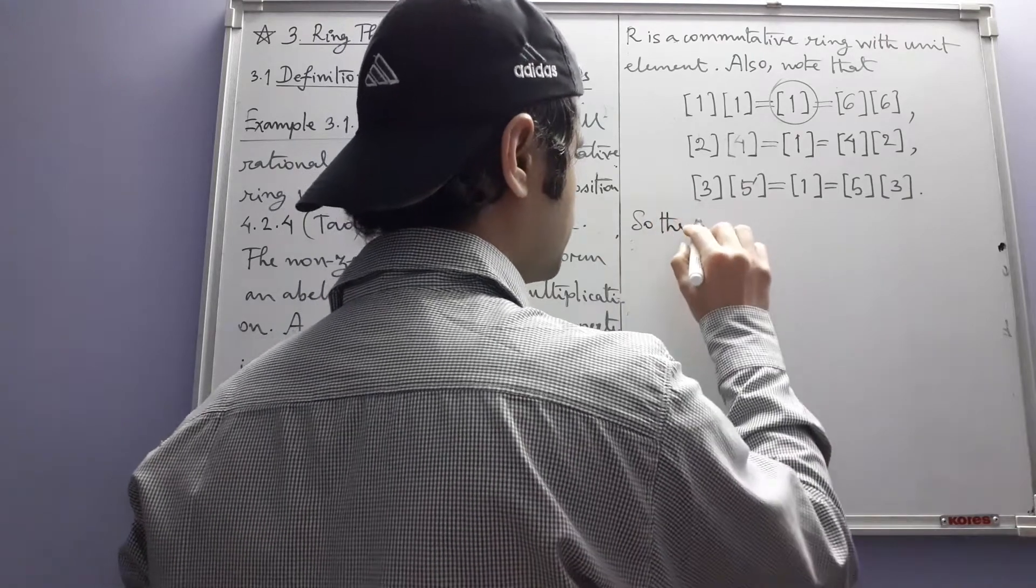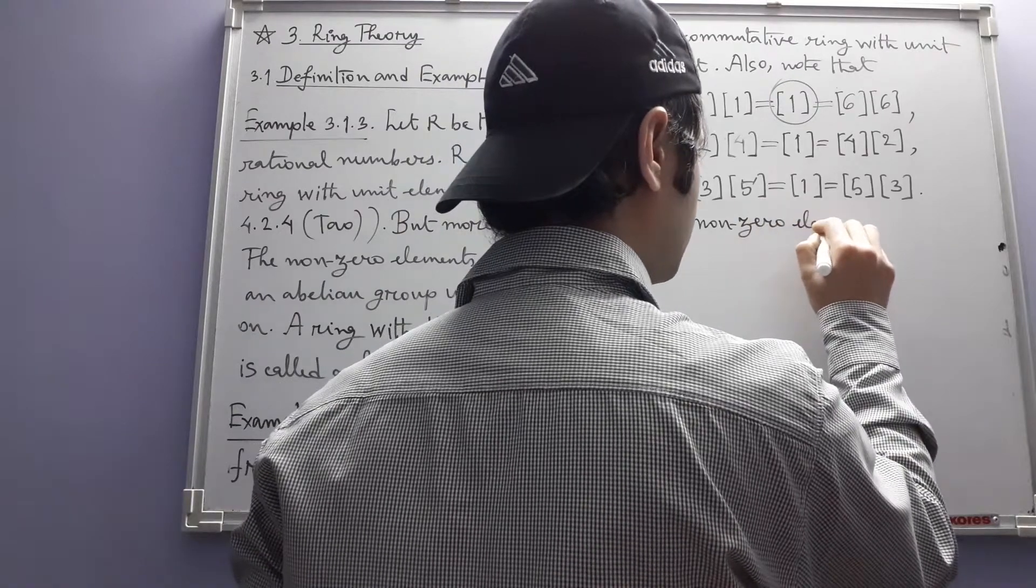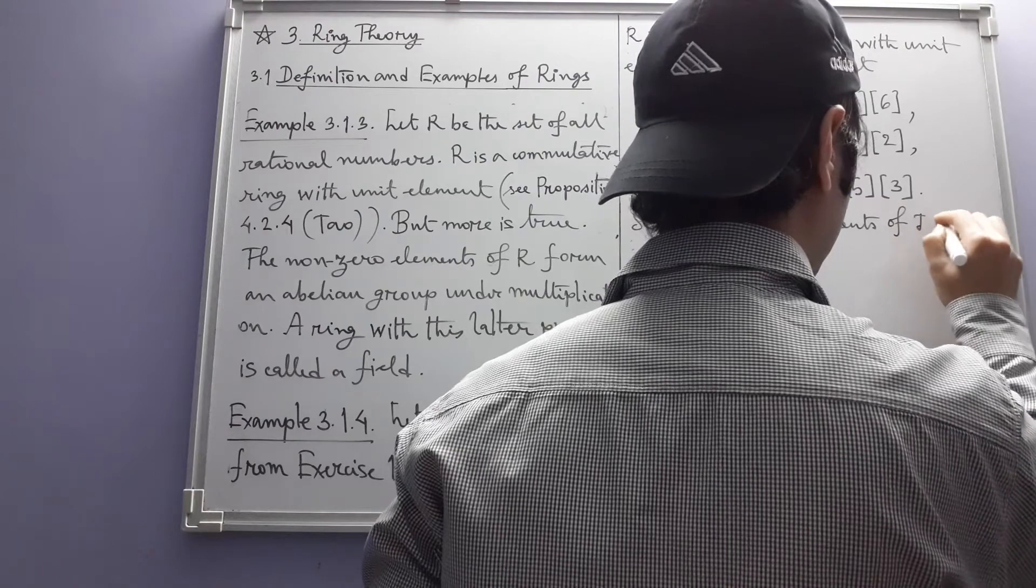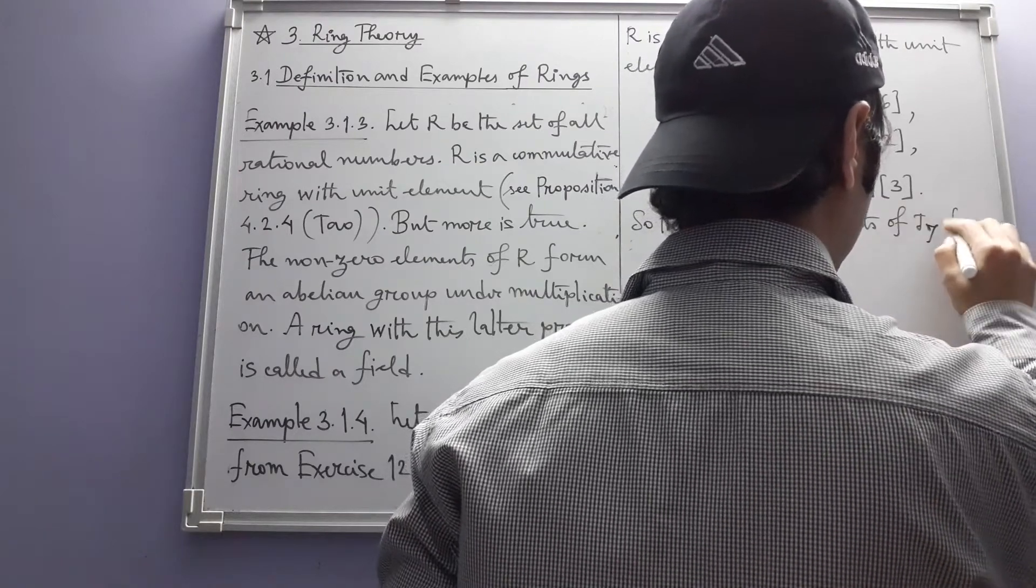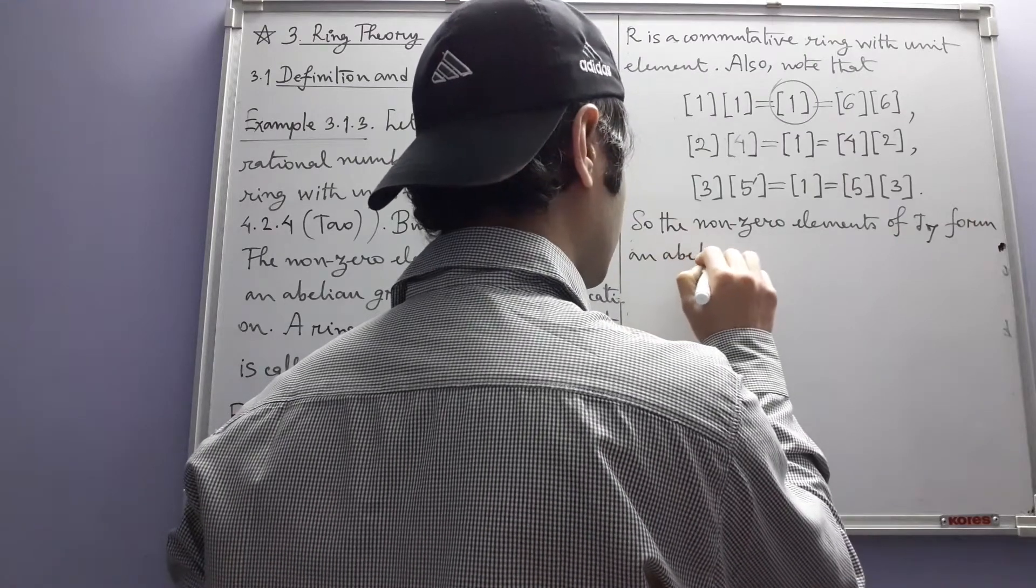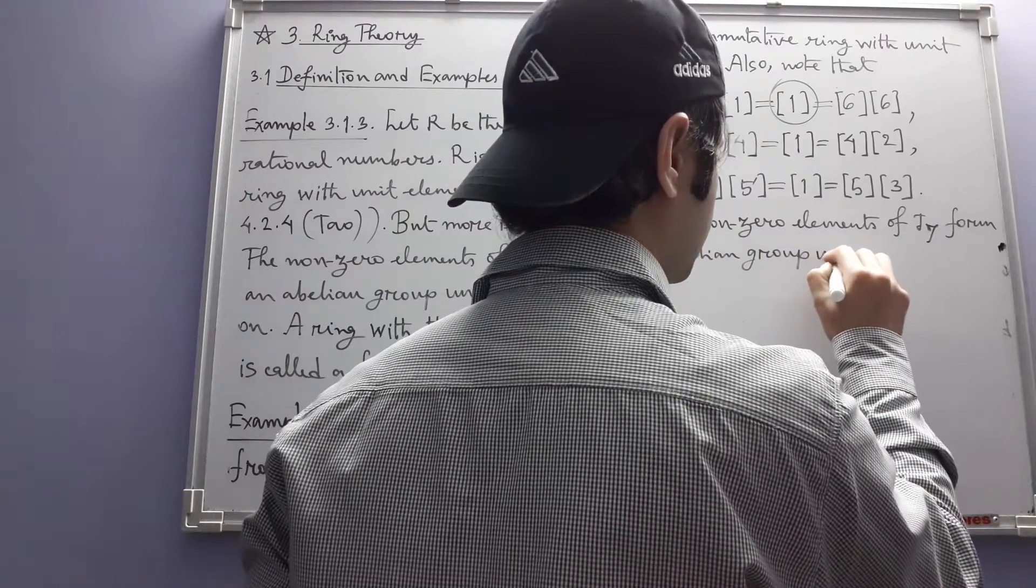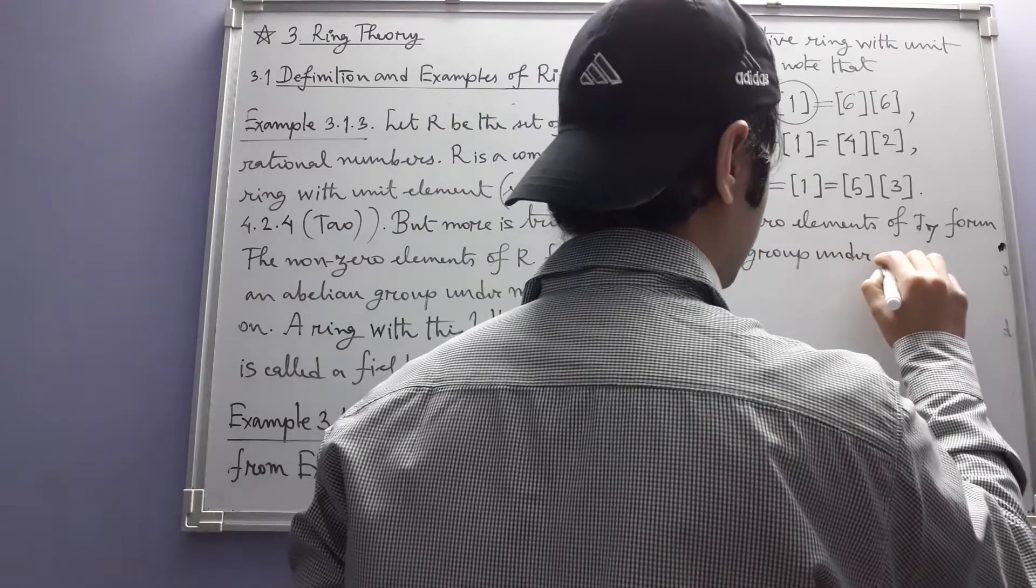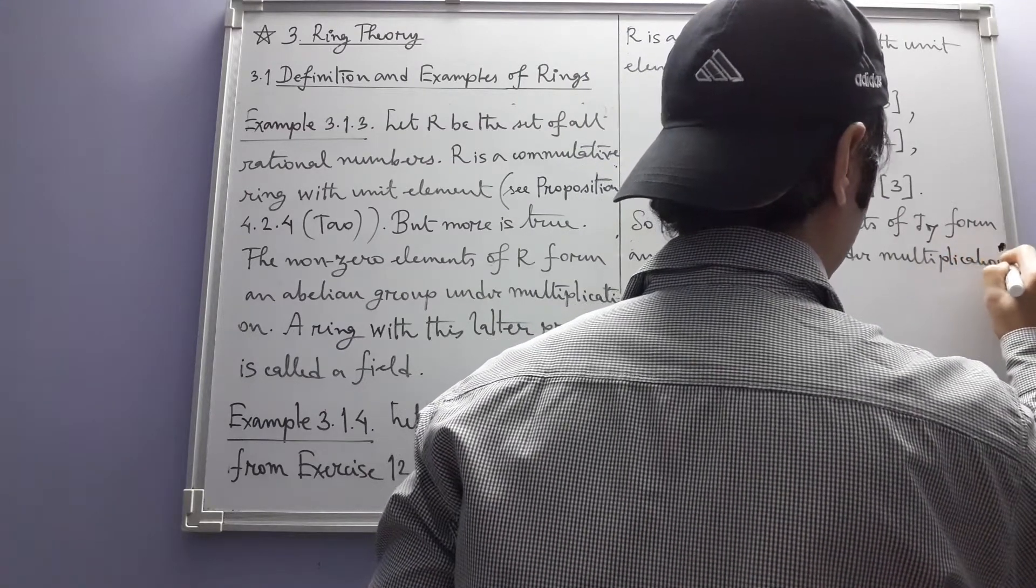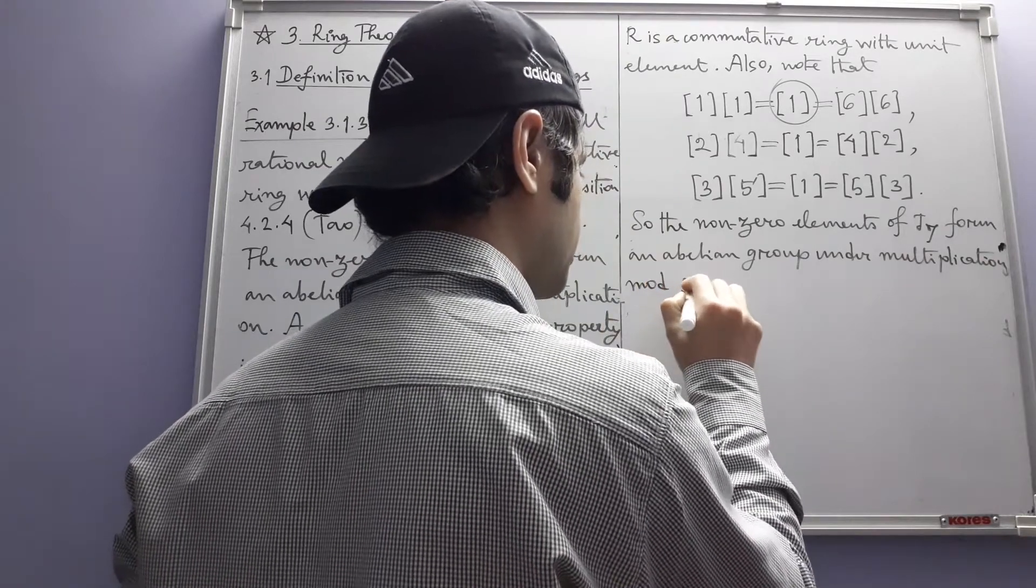The non-zero elements of J7 form an abelian group under multiplication modulo 7.